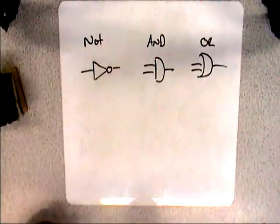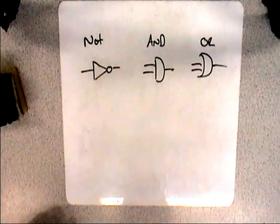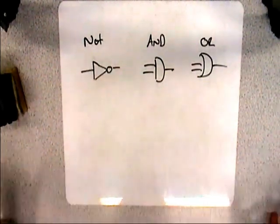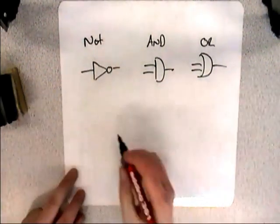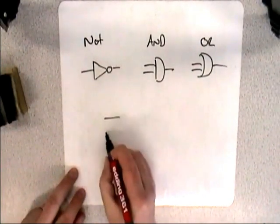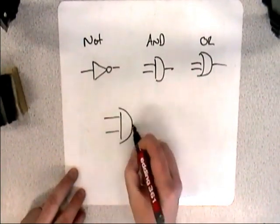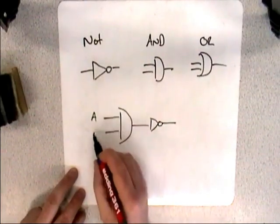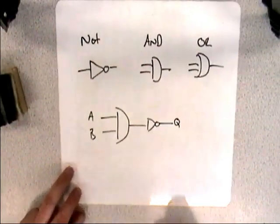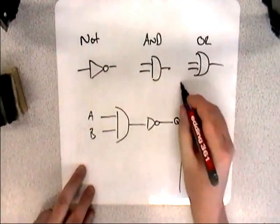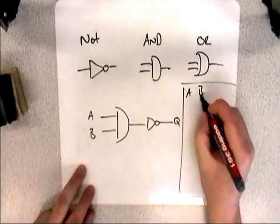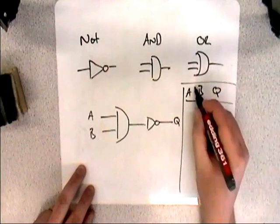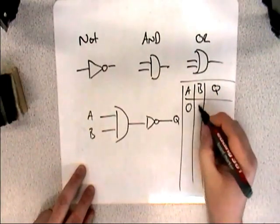The only thing that gets a bit tricky is when you start to combine them. And at GCSE, you shouldn't be given anything too complex. A typical GCSE question might be something like this. You might have an AND gate with a NOT at the end. I'm going to call these A, B, and Q. And all you do is your logic, your truth table rather. A, B, and Q.